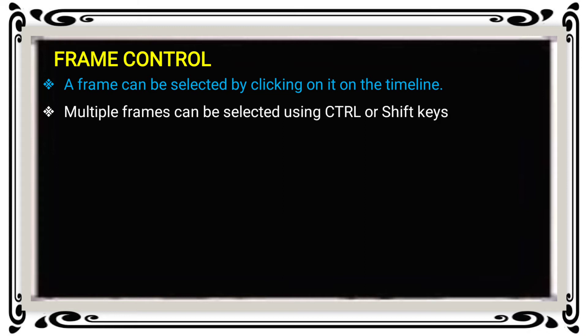Multiple frames can be selected using the Ctrl or Shift key. If you select a single frame, you click directly with the mouse pointer. For multiple frames, other options are available: press Ctrl to select frames one by one, or press Shift to select continuous frames.